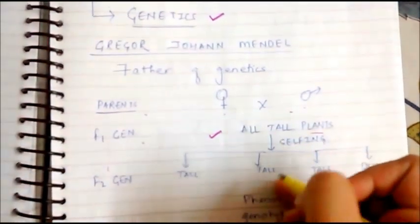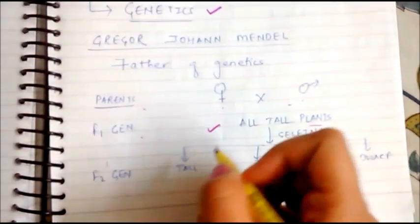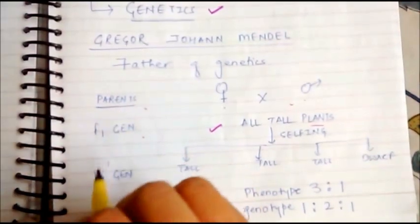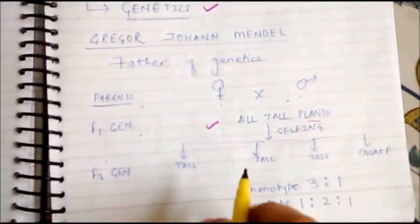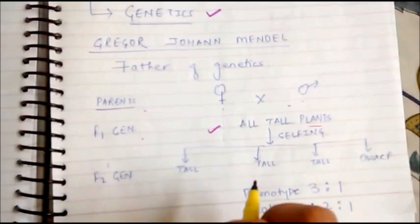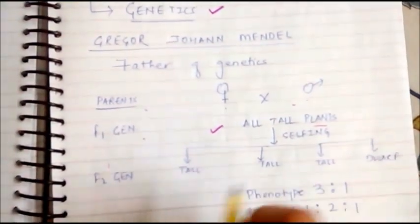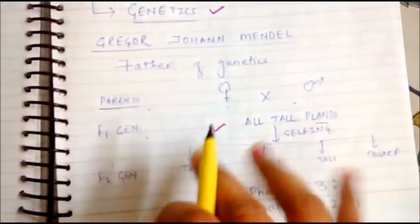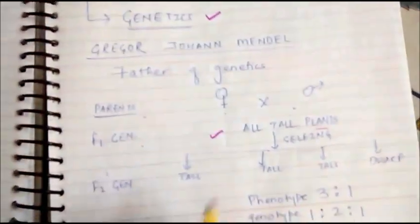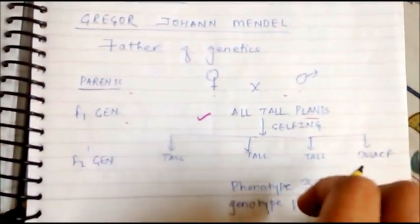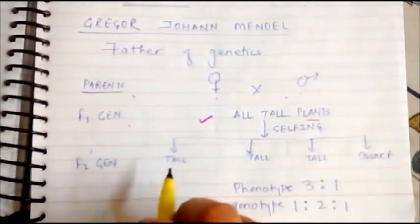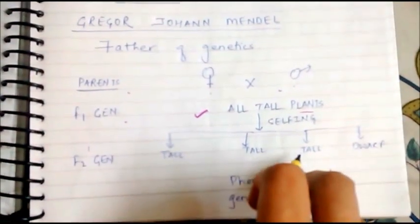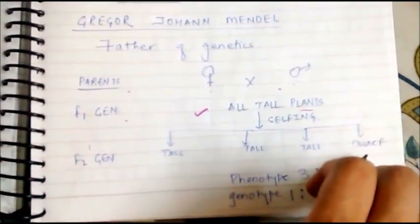After selfing, that means when we do self-pollination, we get the F2 generation. If we consider four plants generated, three of them will be tall and one will be dwarf. Of the three tall plants, one is purely tall and two are recombinants.